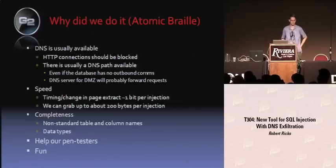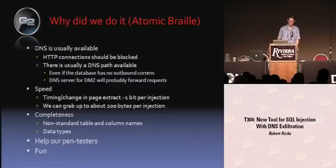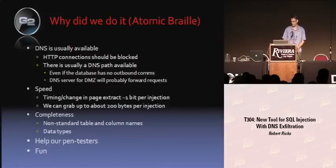So why did we do it? DNS is usually available, so we can use that. It also turns out that it's a lot faster than some of the other exfiltration techniques — for example, timing and change-in-page methods.